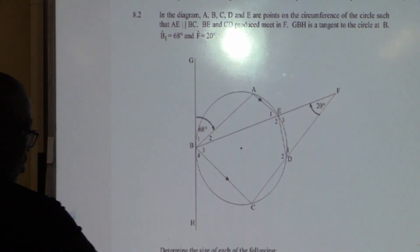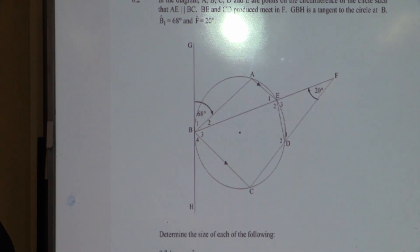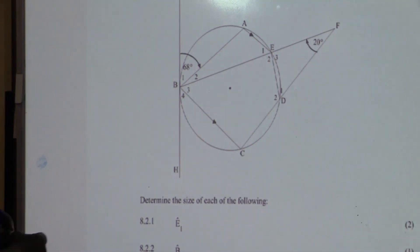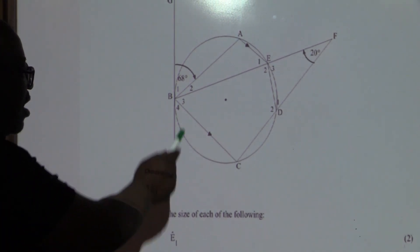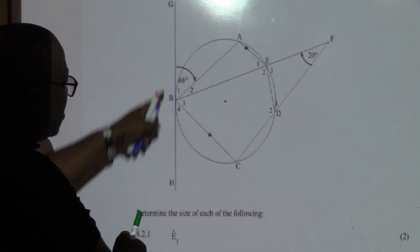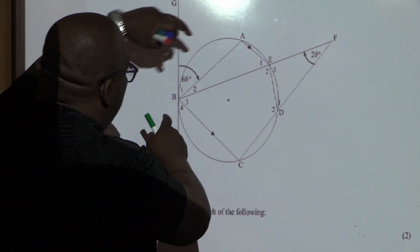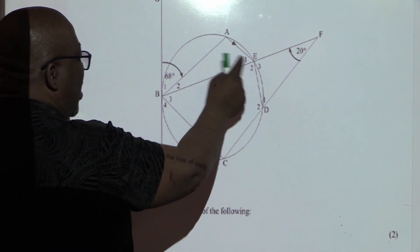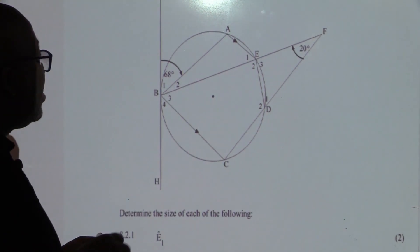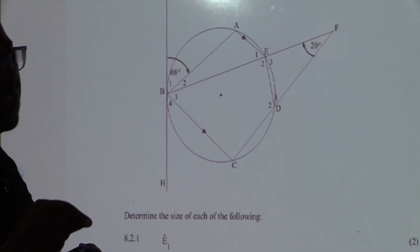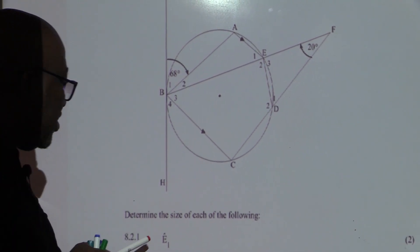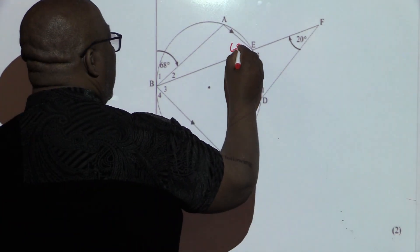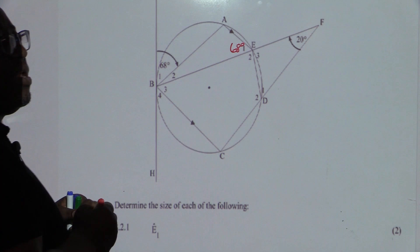Question number one — for two marks, find the value of E1. I've got this one at 68 degrees. This is a tangent and this is a chord. If I go with the chord to the circumference, I will land at E1. So E1 is the same as 68 degrees. Reason: tan-chord theorem. There is a mark for 68 and there is a mark for tan-chord theorem — it's only two marks.